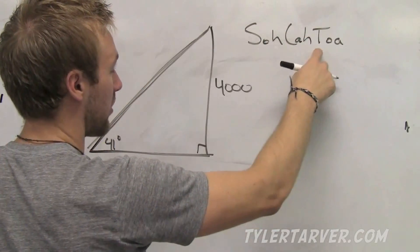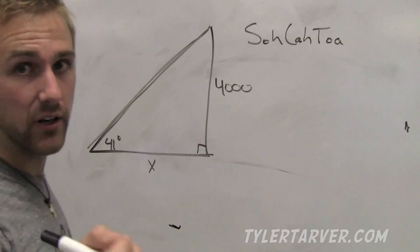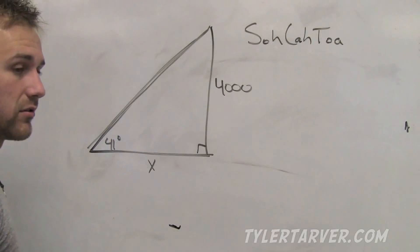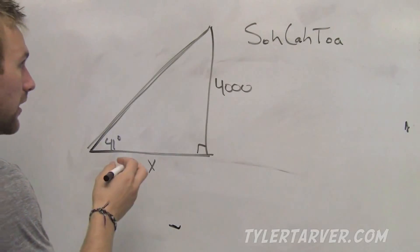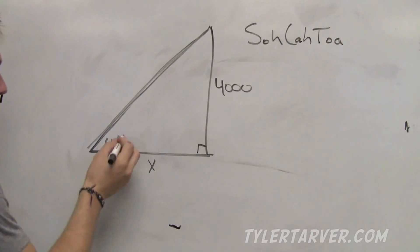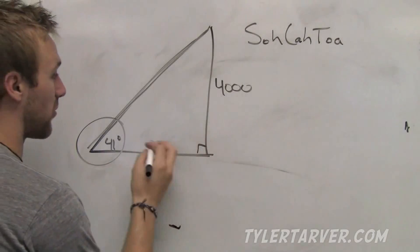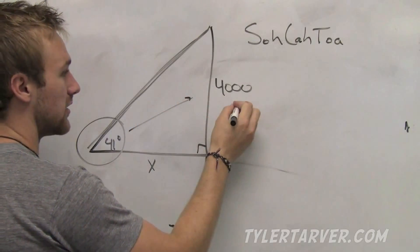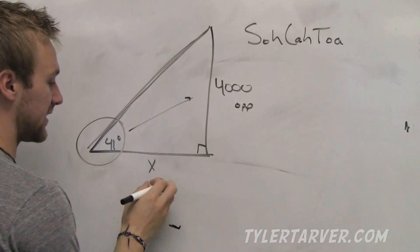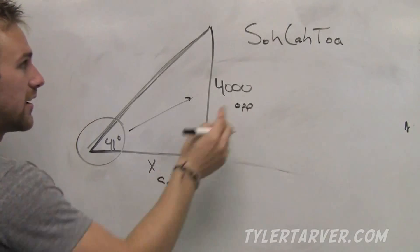We need to know SOHCAHTOA. Some old hag caught another hag tripping on acid, which I don't recommend you should ever do. Now, from this angle, I like to circle my angles because I like to do things correctly. What is 4,000's relationship? Opposite. X is adjacent. That is tangent.